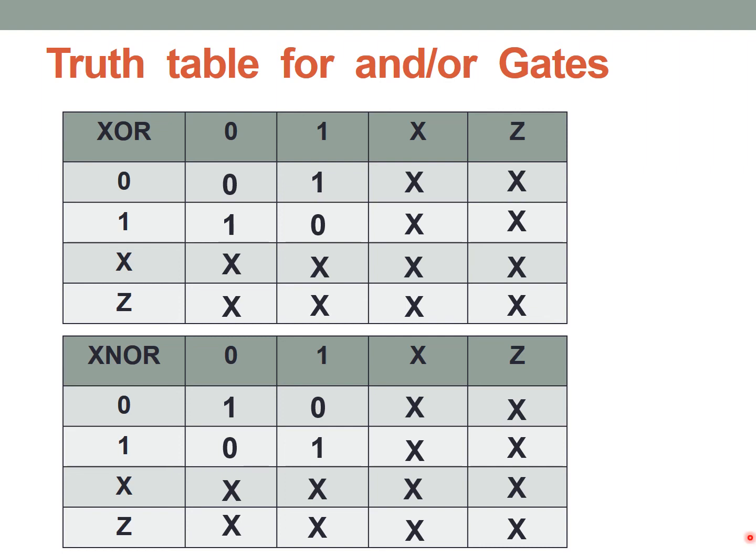In this lecture, we have understood the AND/OR gates, their symbols, the instantiations, and the truth tables of these gates. Thank you.